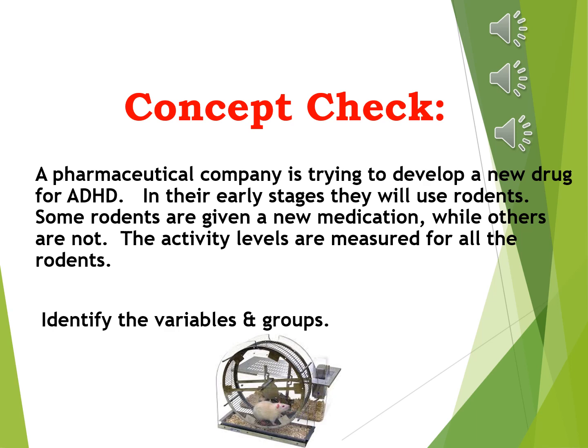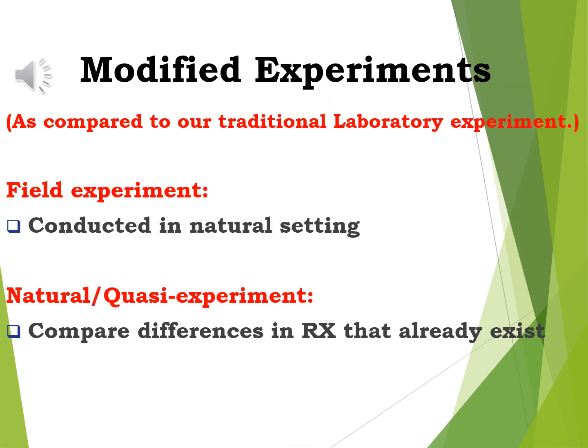Just as there are three types of observational studies, there are also three types of experiments: the traditional laboratory experiment, the field experiment, and the natural or quasi experiment. The field experiment is a true experiment conducted in a natural setting. The natural or quasi experiment takes advantage of a naturally occurring treatment that already exists in the world.